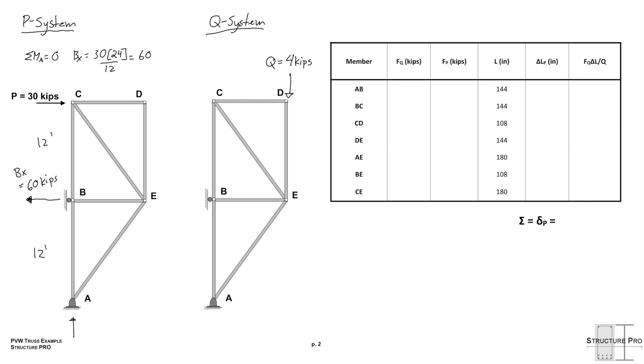And we also have an Ax. Ax has to be 30 kips, the opposite way to balance out the Bx. And finally, Ay has to be 0 because sum of all the forces in the Y direction must equal 0. So we can analyze this truss quick.